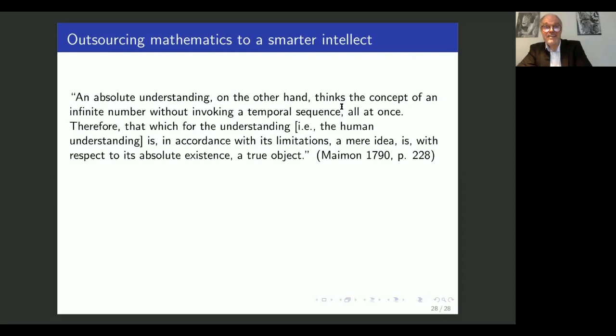And that suggests a reformulation as it is given in Salomon Maimon, in Versuch über die Transcendental Philosophie. An absolute understanding, on the other hand, thinks the concept of an infinite number without invoking a temporal sequence all at once. Therefore, that which for the understanding, that is the human understanding, is in accordance with its limitations, a mere idea, is with respect to its absolute existence, a true object. And I call this outsourcing infinity to a smarter intellect. How mathematicians really think about infinity.